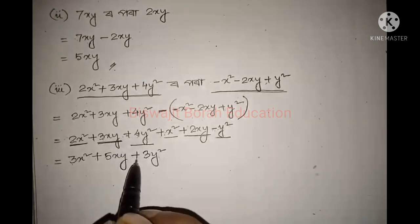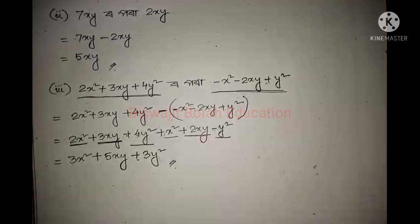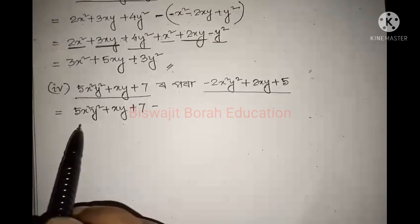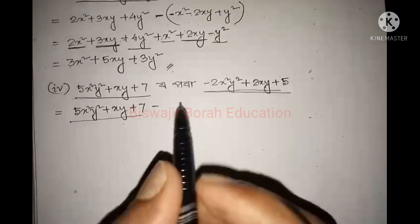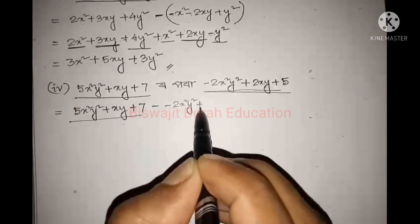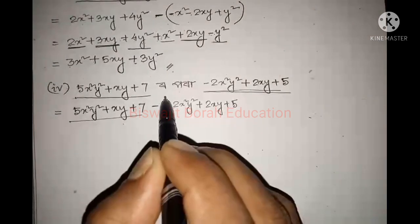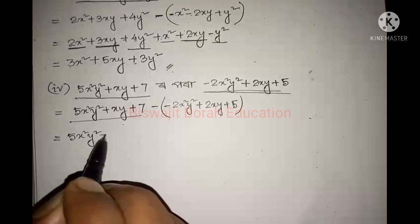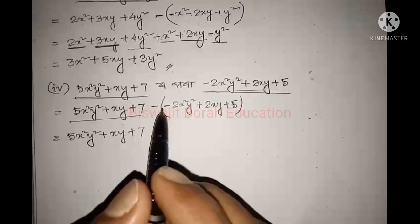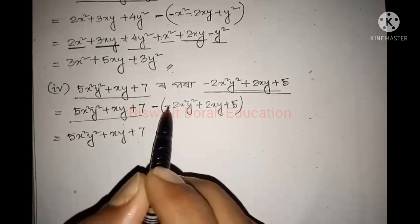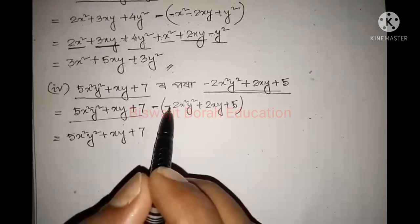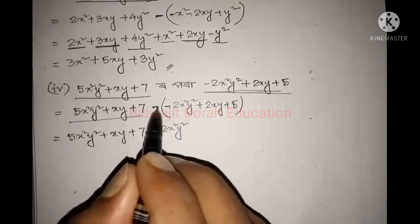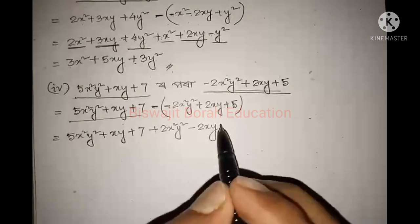Now looking at this with a bracket: minus 2x squared y squared plus 2xy plus 5. Bracket double is equal to minus 2 times. I will write 5x squared y squared plus xy plus 7. I will write minus 2 times, giving minus 2x squared y squared, and plus minus is minus 2xy, and minus 5.